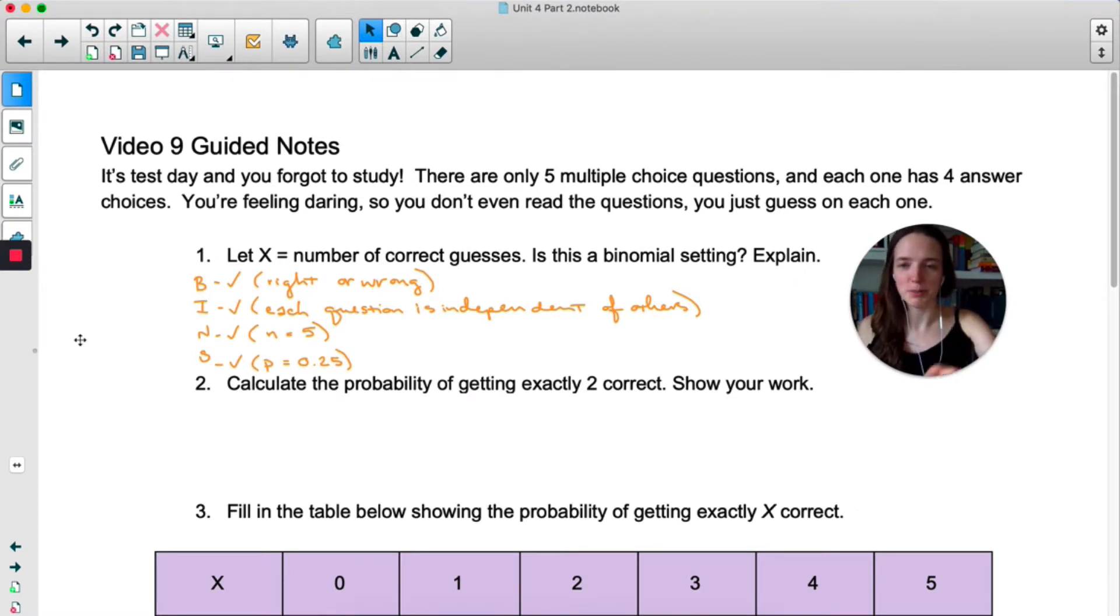So it's probably not a surprise, but yes, this is binomial. It's binary because there's only two options for each trial. You either get the question right or wrong. Independent because each question is completely independent of the others. Now that's only if you're truly guessing on each question. If you just picked C for each question, like your guess on number two is kind of influenced by number one, then they're not really independent. But we're going to say you're actually guessing. N, we have a set number of trials. There's only five questions. And S, we have the same probability on each question. You have a 25% chance of getting each question right.